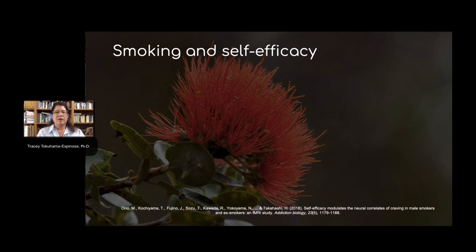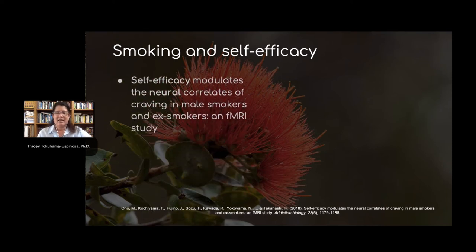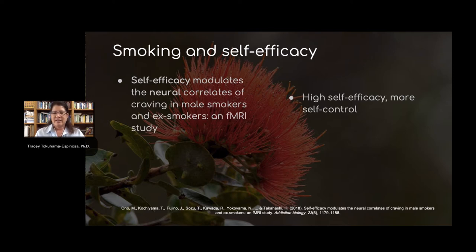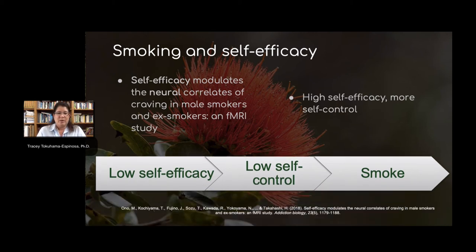Here are a couple of concrete examples about behaviors — like smoking cigarettes. What would that have to do with self-efficacy? It's interesting to see that some self-destructive behaviors have a really tight link to self-efficacy. Self-efficacy modulates neural correlates in the brain related to the craving for smoking. Neural networks in the brain are actually changed by the level of self-belief — I can do this or I can't do this. Higher self-efficacy means higher self-control, but low self-efficacy and low self-control leads to continued smoking. There is a link, believe it or not, between self-efficacy and self-destructive behaviors like smoking.